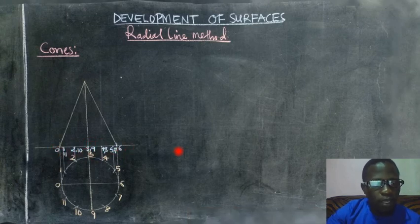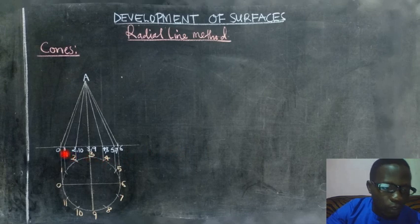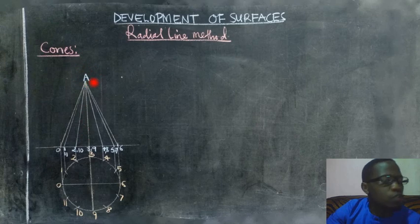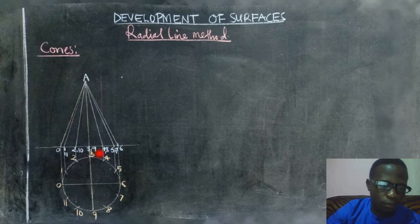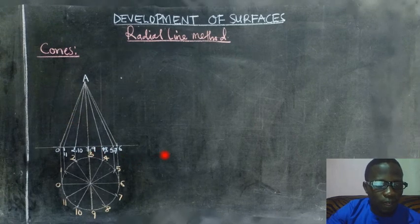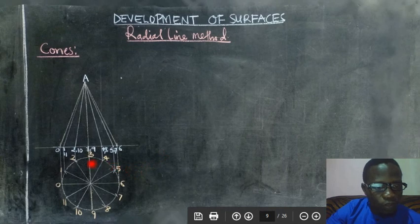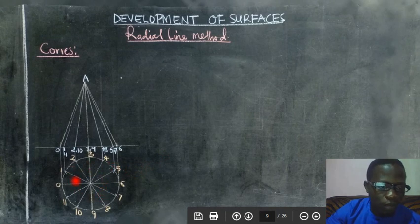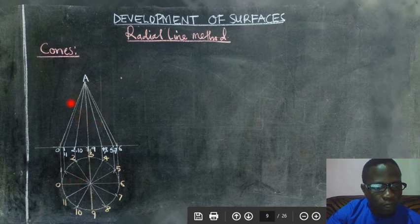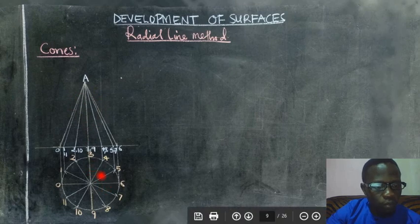We now join those points to the apex of the cone itself such that will create the imaginary lines on the front view. Having done that because the cone is seen now as a circle when you view from the top having created the imaginary lines on the front you can as well create them on the plan to show the complete view of that figure.